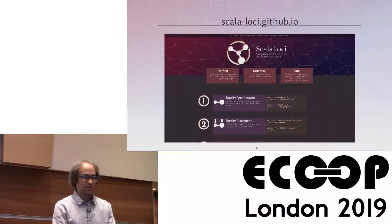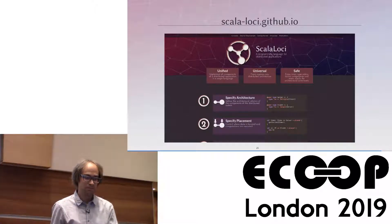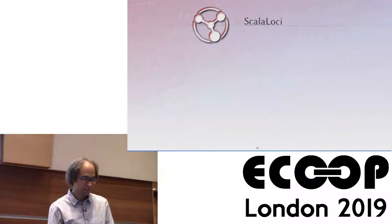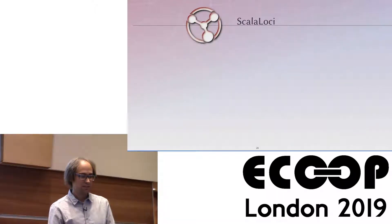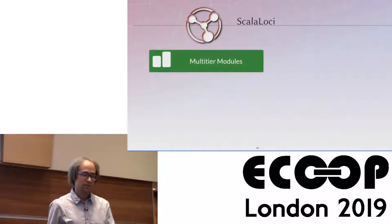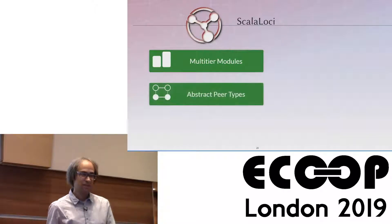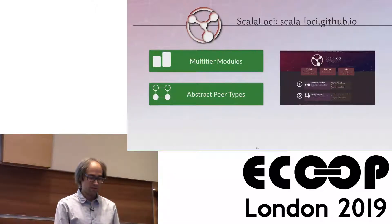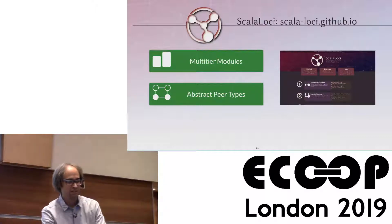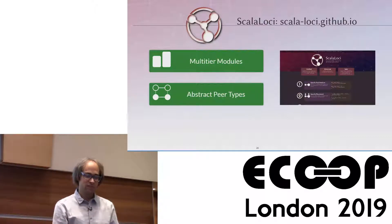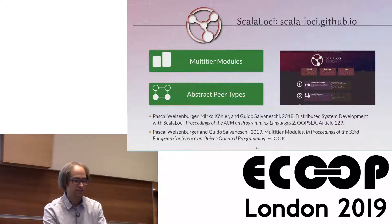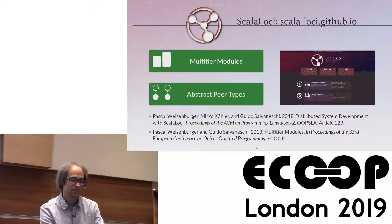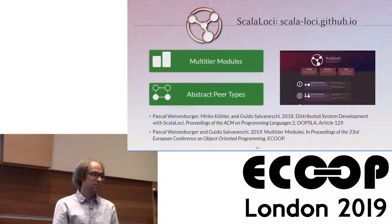The implementation of this language and our case studies are available on GitHub at ScalaLoki.github.io. To conclude: I presented a multi-tier module system for ScalaLoki, a language for developing generic distributed systems using a coherent multi-tier programming model based on abstract peer types which enable distributed functionalities to be composed. The code is available open source, and more details about this multi-tier module system and further evaluation results can be found in our ECOOP paper. Other abstractions of ScalaLoki are presented in our last year's Uppsala paper.